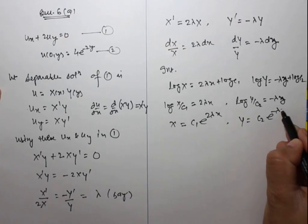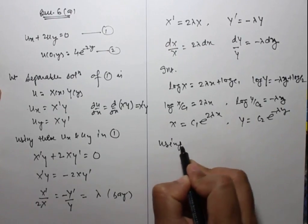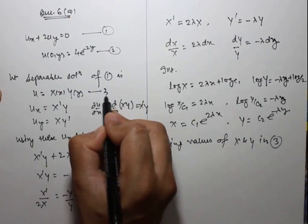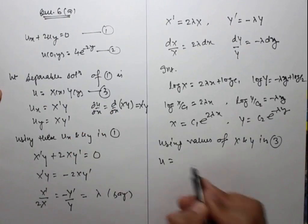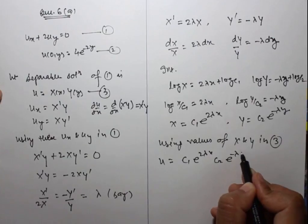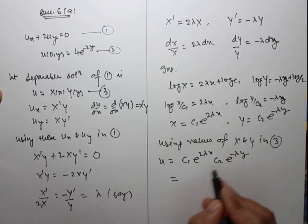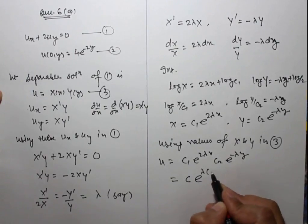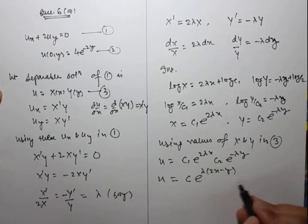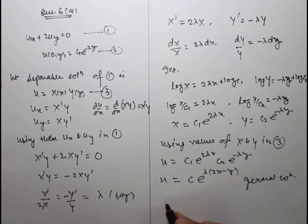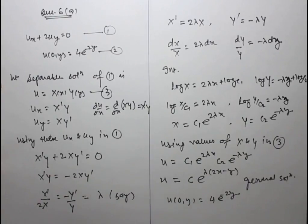Using the values of X and Y, u equals c₁e^(2λx) times c₂e^(minus λy), which equals c·e^(2λx minus λy). This is the general solution.